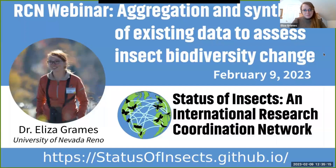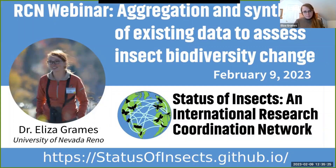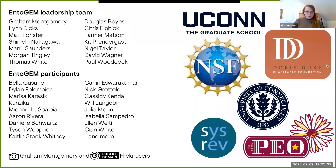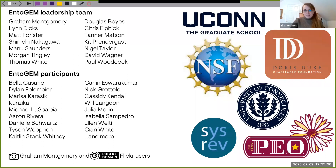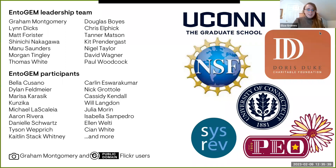This is our second webinar in the webinar series, and we're hoping to make these a lot more frequent. Today I'm talking about aggregation and synthesis of existing data to assess insect biodiversity change — not just declines, but any type of change overall. I want to acknowledge that this is part of a big collaborative effort, with many people involved in both the planning and execution of the EnteGem project, and many funding sources.